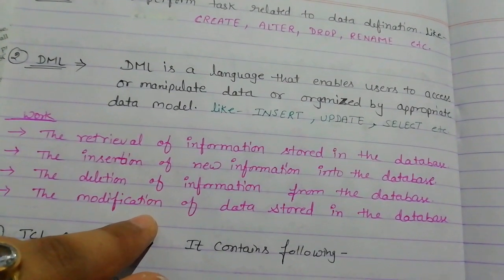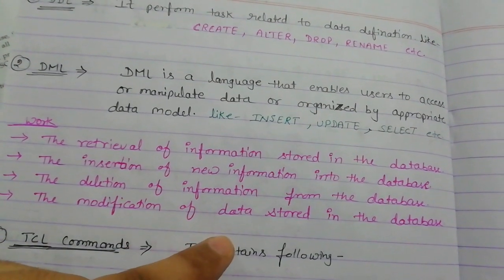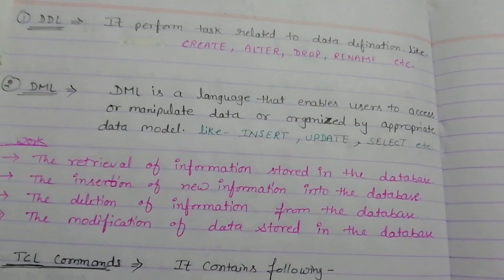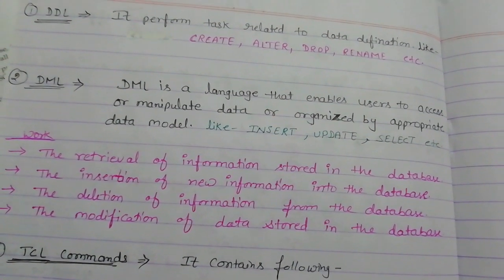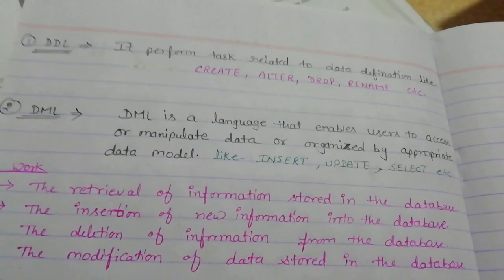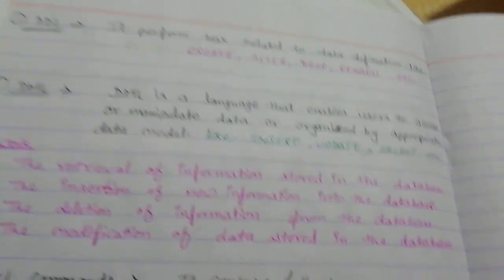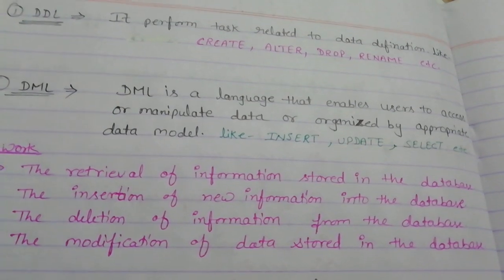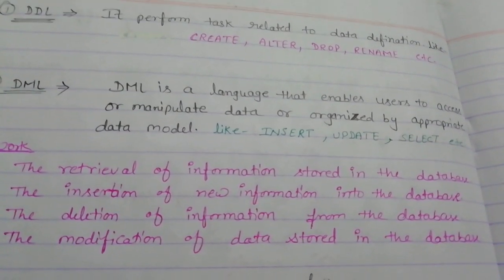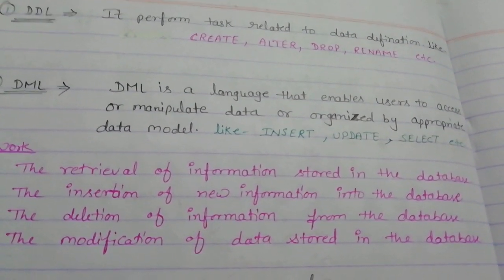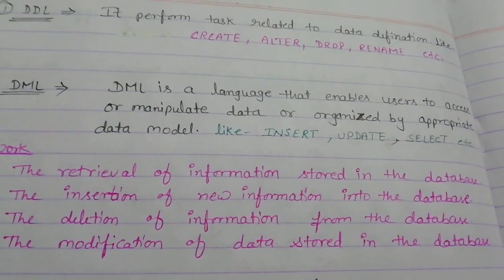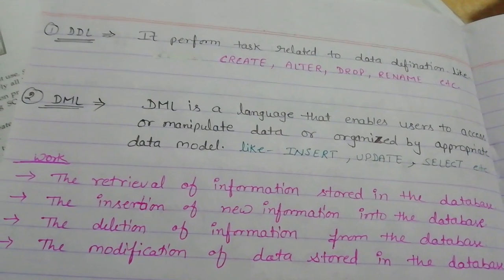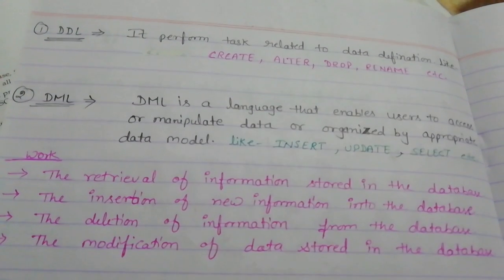The fourth point is the modification of data. Modification means to change any data. For example, suppose your name is A and you want to change it to B — so the record A will have a modification: the student name A is modified to B. These commands are all completed from DML.